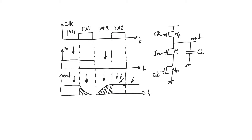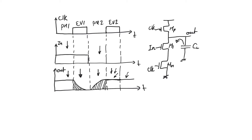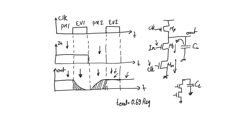In the evaluate case where we are evaluating a zero, we are discharging the output node capacitance CL through MN, since we are in the evaluate phase. The only way to have a path to ground is for MN to be on, which requires the clock to be one, and also requires the input to be one so that M1 is on. The equivalent circuit during the evaluate phase consists of CL, M1, and MN, giving an evaluate delay of 0.69 × R_equivalent × CL, where R_equivalent is the total resistance of all transistors in the path to ground.